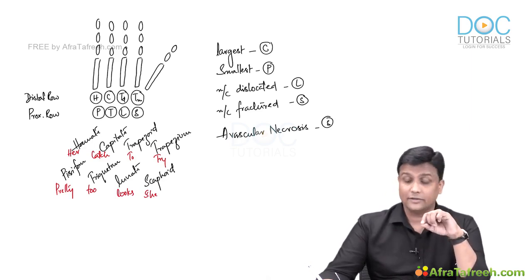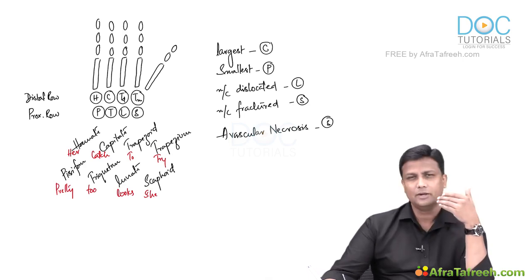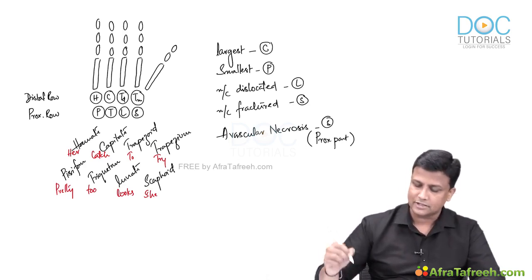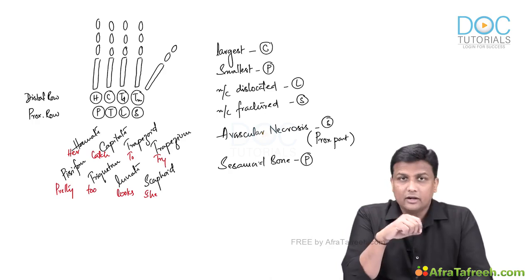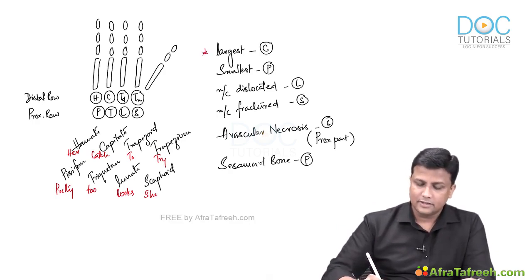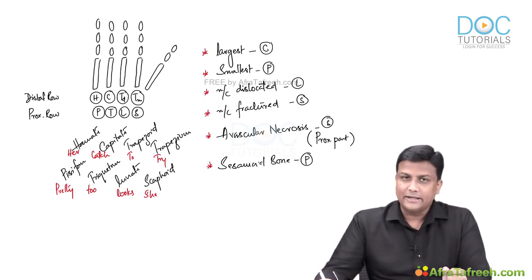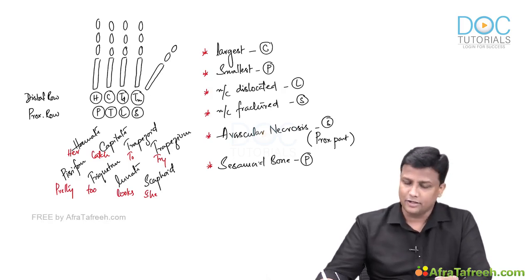Scaphoid is the carpal bone that undergoes avascular necrosis. In PG exams they even ask which part — it is the proximal part of the scaphoid that undergoes avascular necrosis. And lastly, the sesamoid bone among all eight carpal bones is pisiform, which ossifies in the tendon of flexor carpi ulnaris. Summary: largest — capitate; smallest — pisiform; most dislocated — lunate; most fractured — scaphoid; avascular necrosis — proximal scaphoid; sesamoid — pisiform.